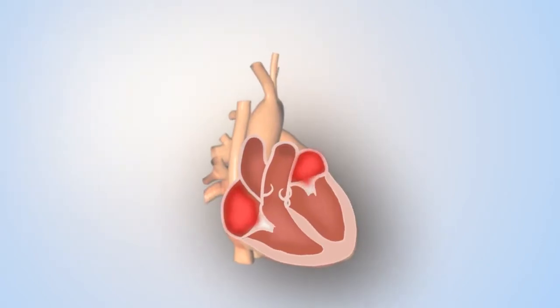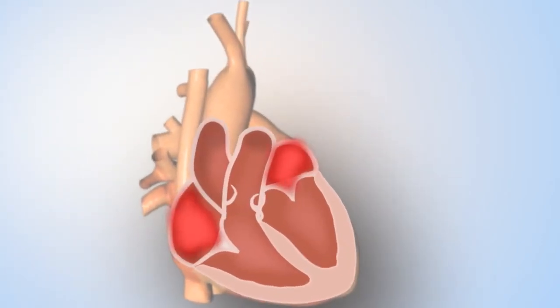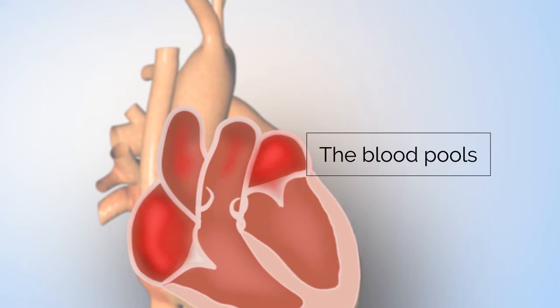The second major consequence of atrial fibrillation is the risk of stroke. Because the top chambers are not contracting normally, the blood pools, which can cause a blood clot to form.